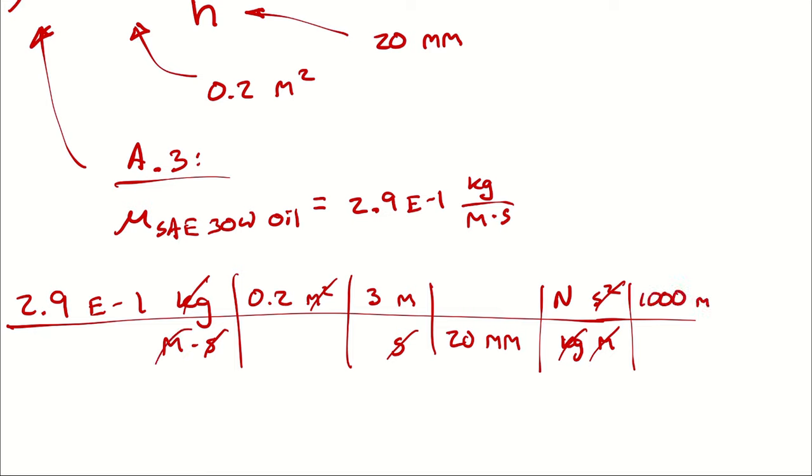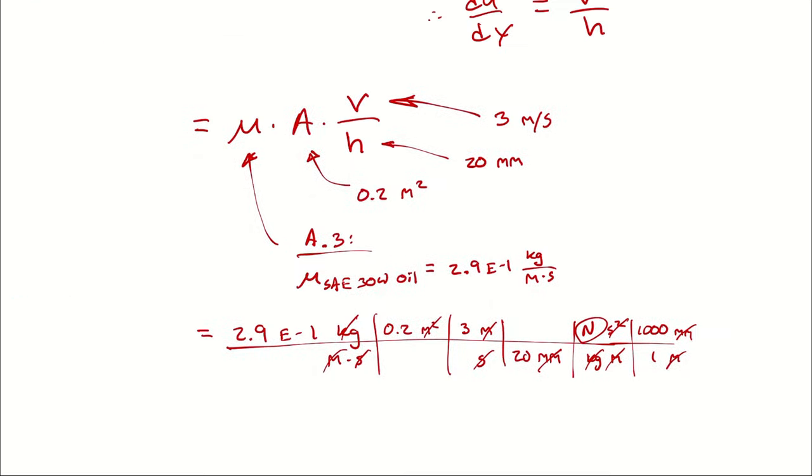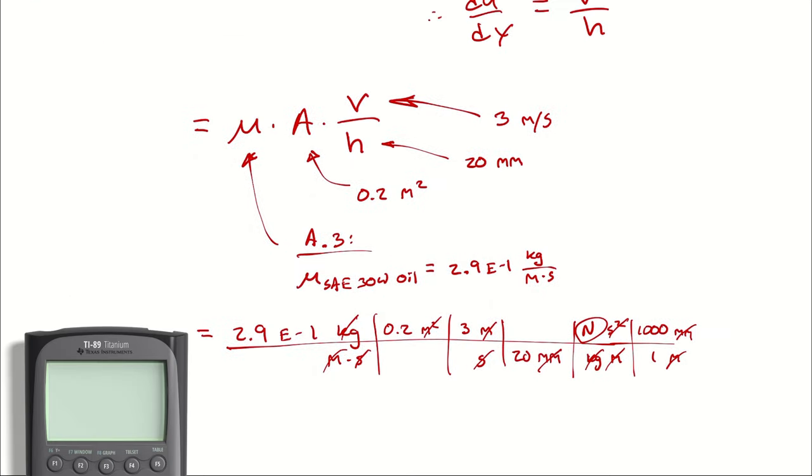So to finish up, I just need to convert millimeters to meters, and then I can cancel millimeters and meters. That will give me an answer in newtons. So if our calculator will deign to help us out, we can say 2.9 e to the negative first multiplied by 0.2 multiplied by 3 multiplied by 1,000 multiplied by 1 over 20.